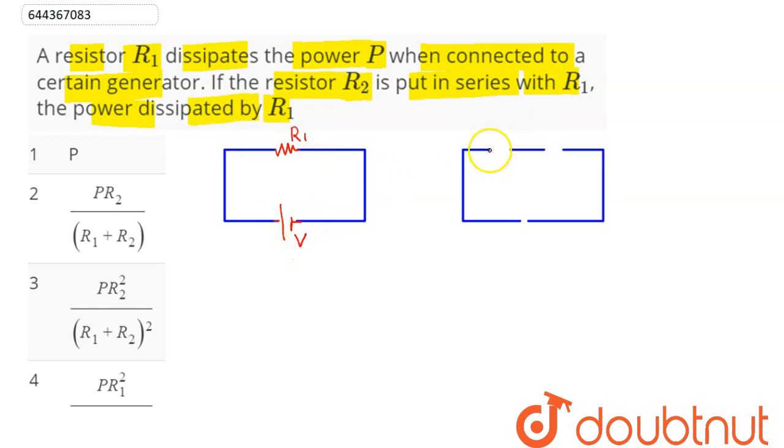Now here it says when R1 and R2 are in series, the power dissipated across the same resistor R1. If initially power dissipated across R1 was P, we can see here that